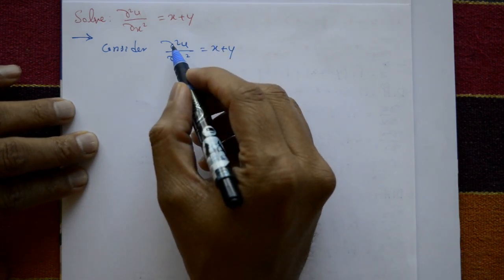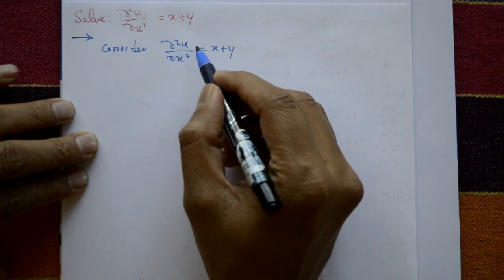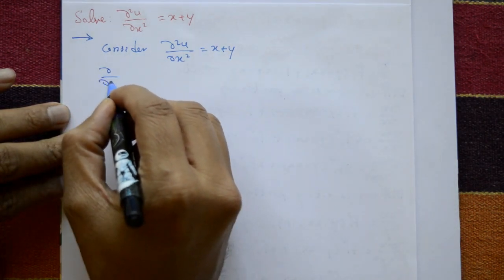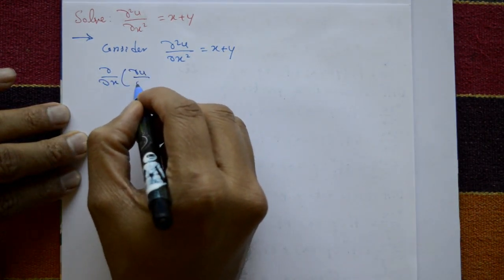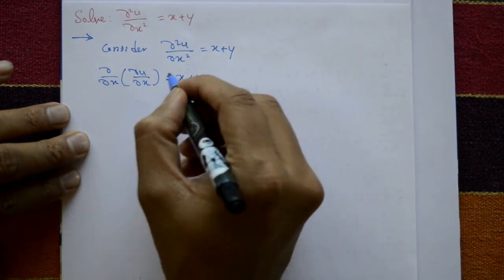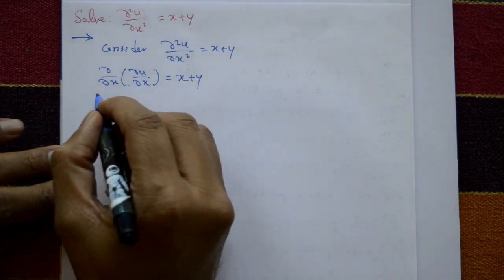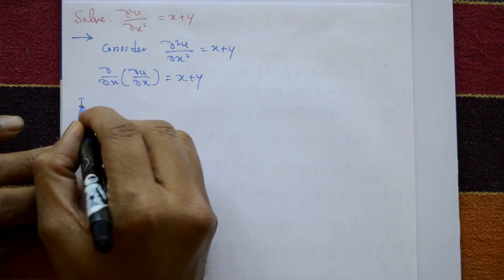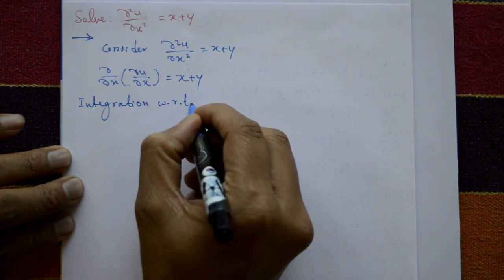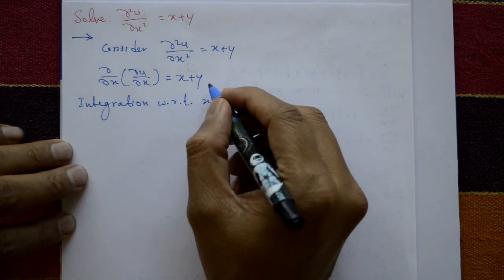Now integrate two times with respect to x. The left-hand side is ∂/∂x(∂u/∂x) = x + y, which is ∂²u/∂x². Now split it and integrate both sides with respect to x, treating y as a constant.